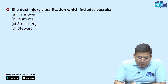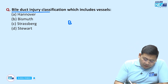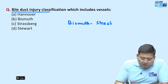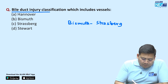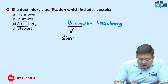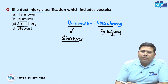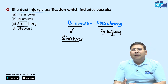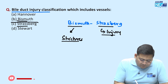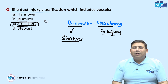Next is bile duct injury. There is a classification known as Bismuth-Strasberg classification. Bismuth is for the strictures and Strasberg's classification is for the injury. Bismuth-Strasberg A, B, C, D are for the injury, and E is for the strictures. So Strasberg is for bile duct injury and the Bismuth part is for strictures.